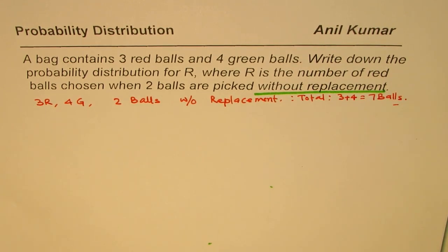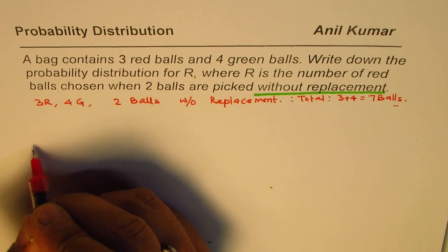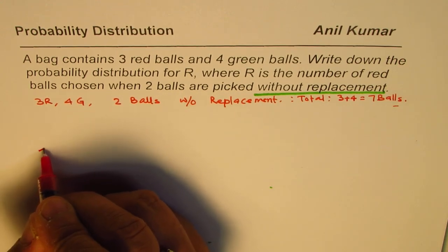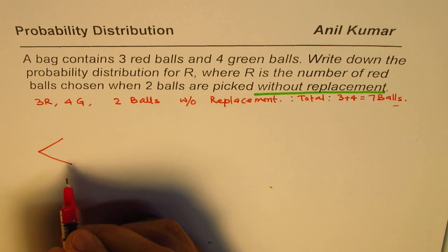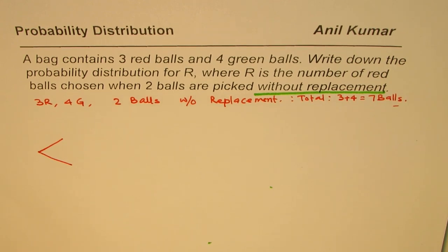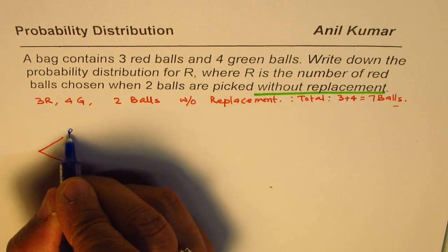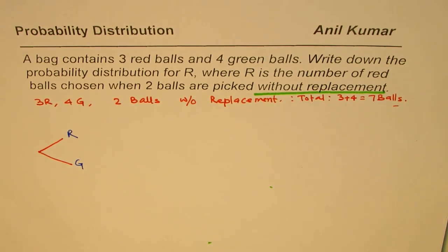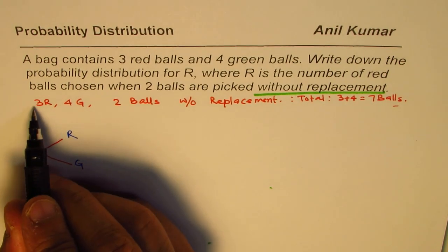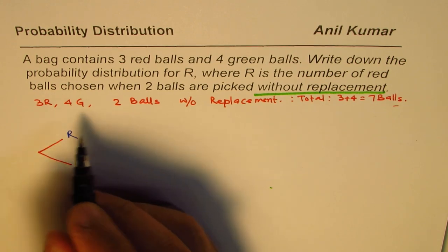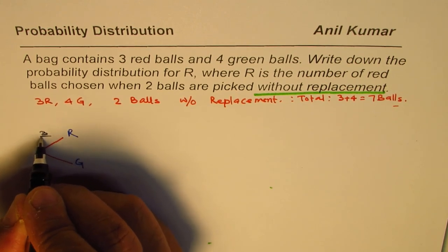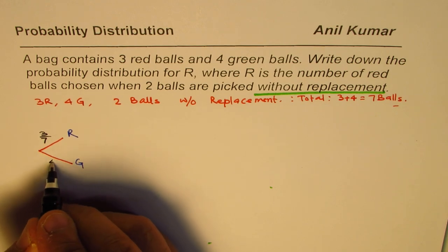There are seven balls total. That will help us find the probability. Now let's begin by choosing the balls. When we make the first selection, we could get either a red ball or a green ball. The probability of a red ball is three out of seven, since there are three red balls out of seven. And four out of seven is for the green ball.